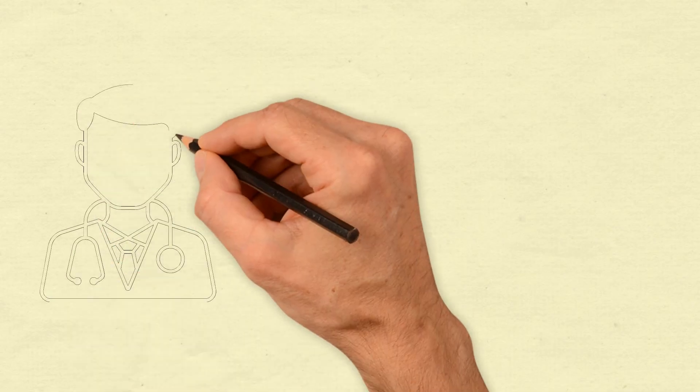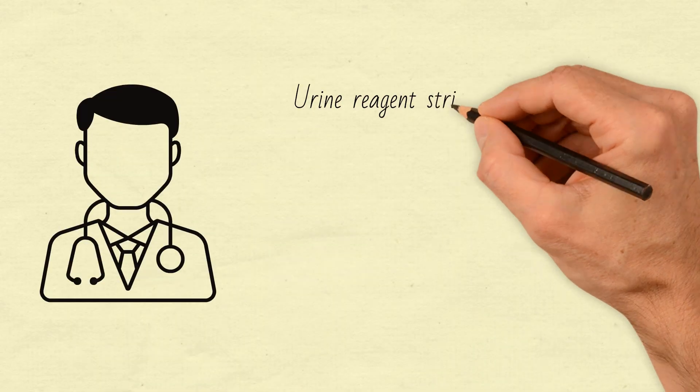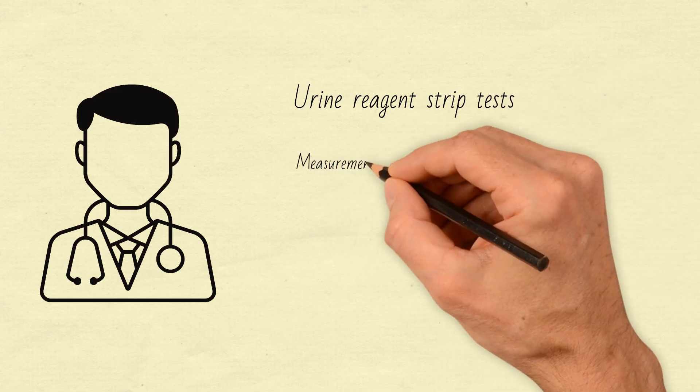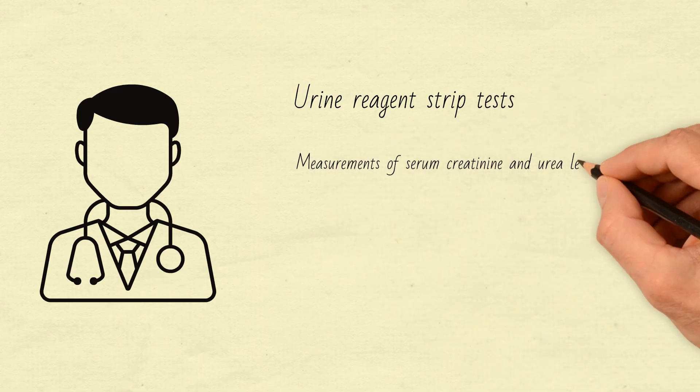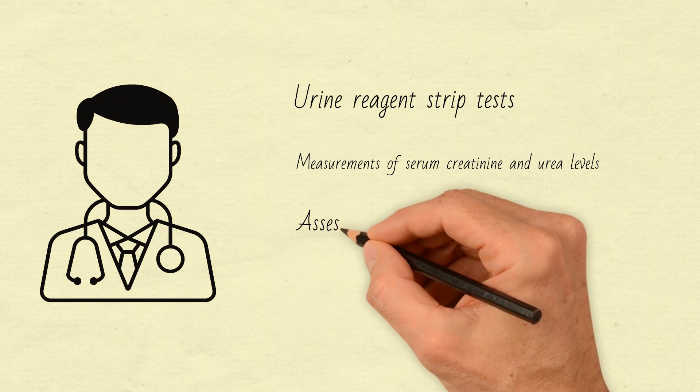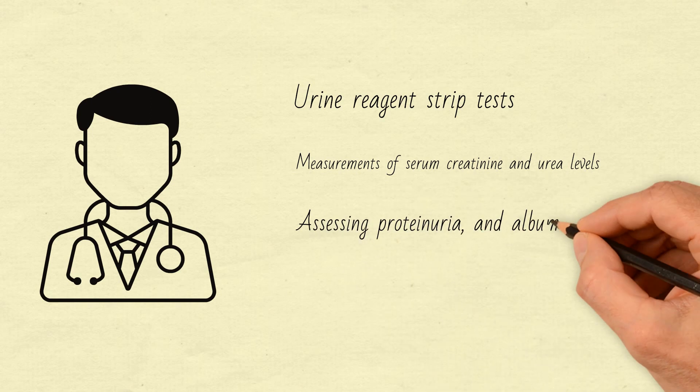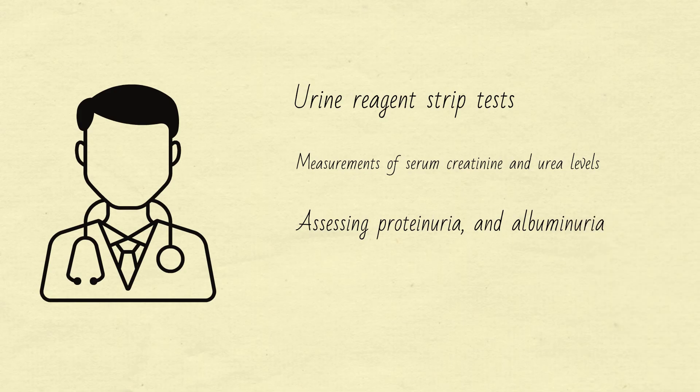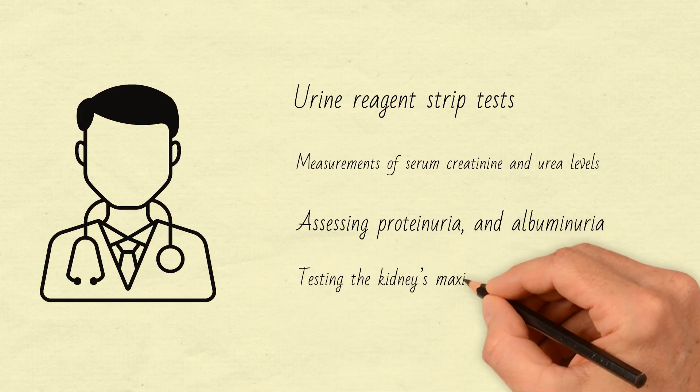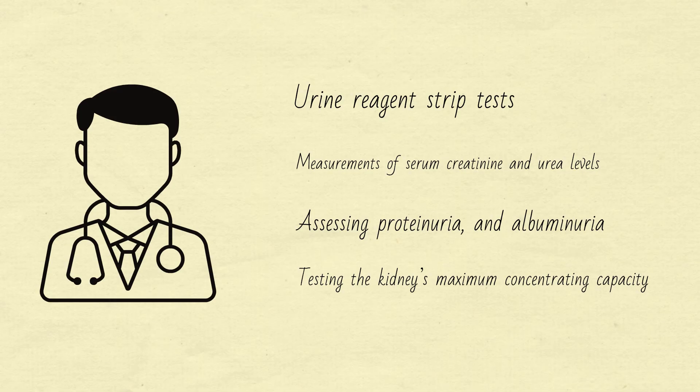It's a key indicator used to monitor kidney function and assess the severity of kidney damage. To evaluate kidney health, doctors rely on a variety of tests, including urine reagent strip tests, measurements of serum creatinine and urea levels, assessing proteinuria or excess protein in the urine, and albuminuria, which is excess albumin in the urine, and testing the kidney's maximum concentrating capacity. We will go through each one of them.